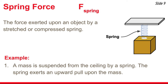Spring forces, denoted by the symbol F-spring, are sometimes confused with tension forces. Tension forces result from strings, wires, cables, and chains, but a spring force results when there's a stretched or compressed spring — such a spring exerts a spring force upon the objects it's attached to. For example, a mass suspended from the ceiling by a spring — the spring exerts an upward pull upon the mass that we call F-spring.